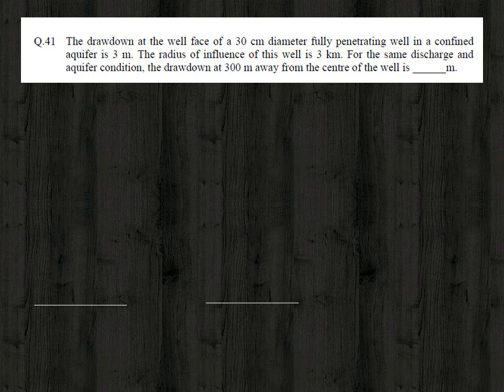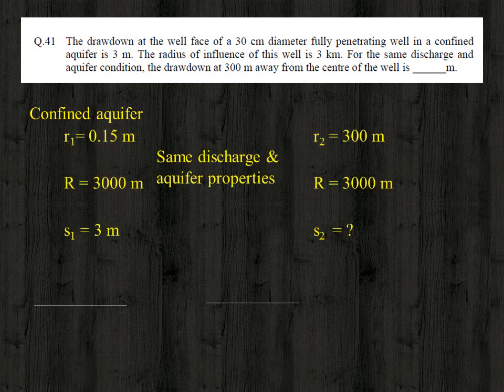A confined aquifer is one in which both the top and bottom are sealed. The radius of the well r1 is 15 centimeter or 0.15 meter. The radius of influence R is 3000 meter, and the drawdown for this first condition S1 is 3 meter.